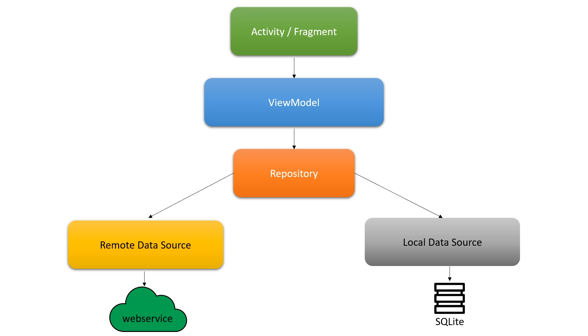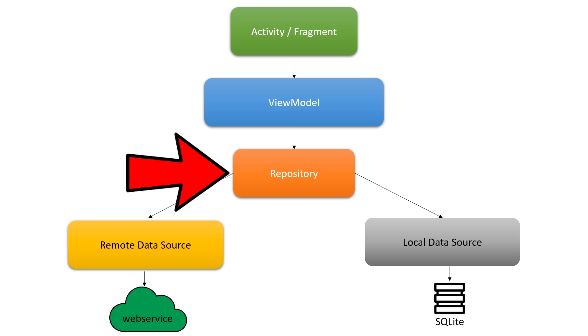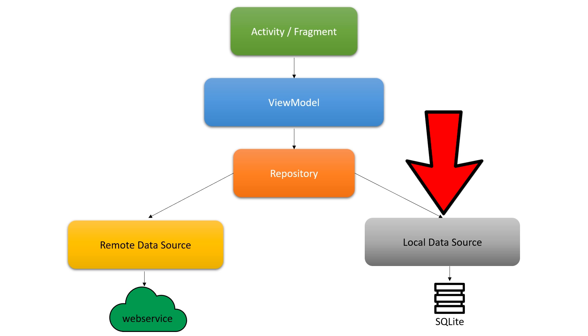Let's talk about testability. On the screen here I have one of the most common diagrams in all of Android development — the general architecture recommended in the Android documentation. You have your activity and fragment, which is essentially your UI. Then you have the ViewModel, which is sort of a hub for communication between data and UI. Data comes in from the repository and gets sent to the UI. Then you have the repository, which is a hub for data distribution — it connects to a remote data source and a local data source, for example accessing the network or a local database cache.